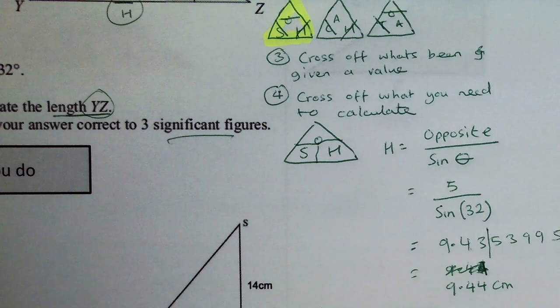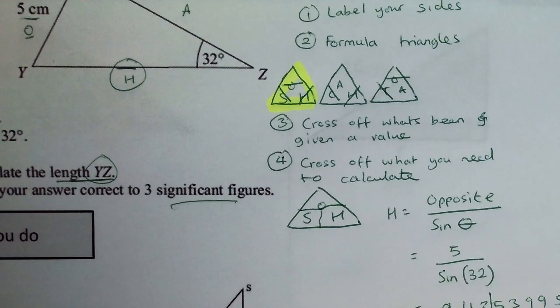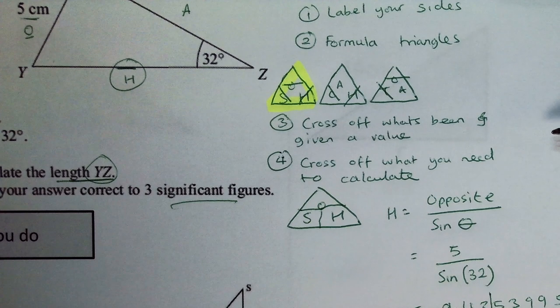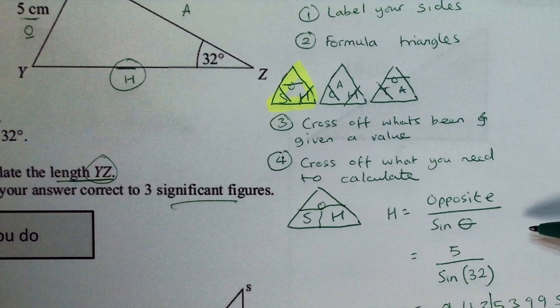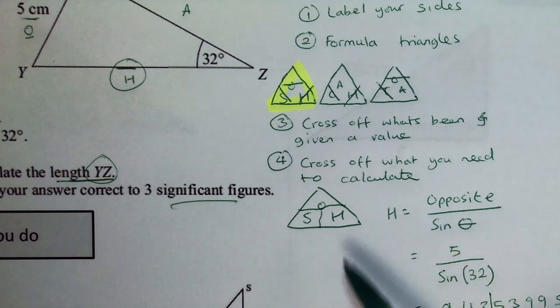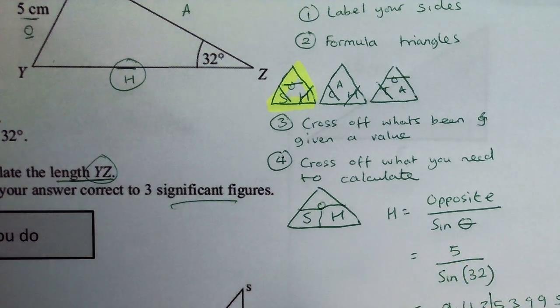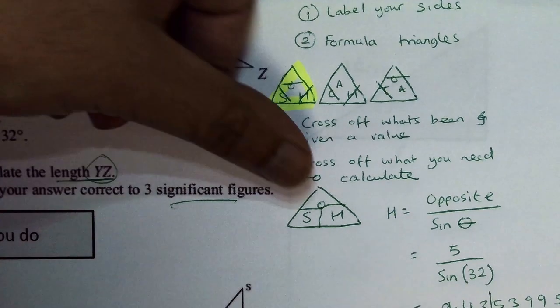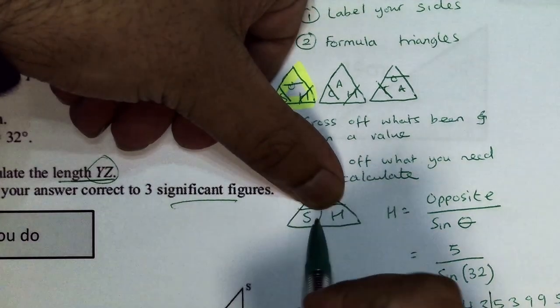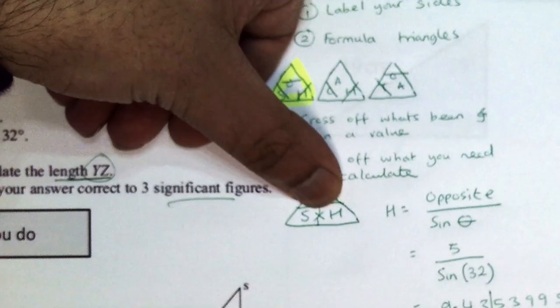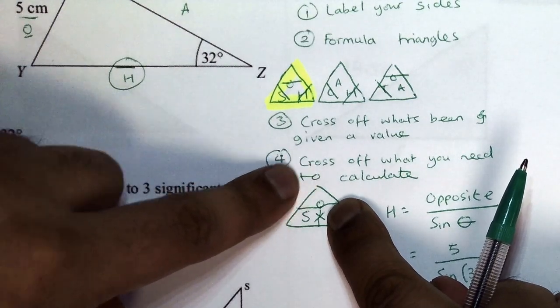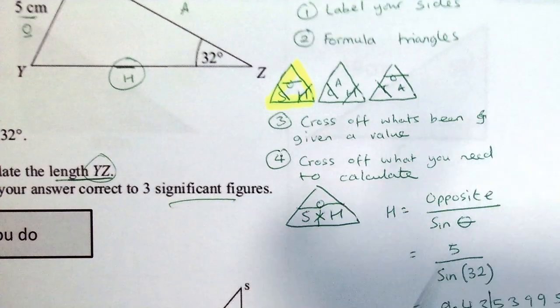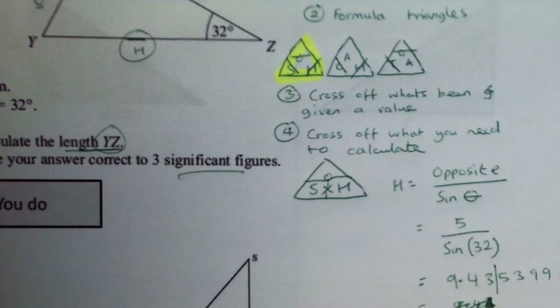So step 1: label your sides. Step 2: write your formula triangles. Cross off what's been given a value, cross off what you need to calculate, and then use the formula triangle. If you have a curve at the top value, for example if you're going across you would times, but in this case because we're going top over the bottom we need to divide the two values.